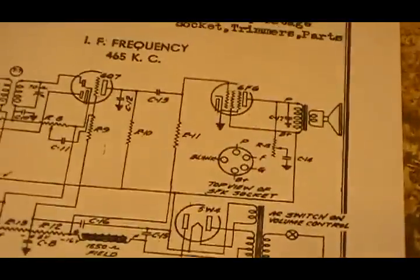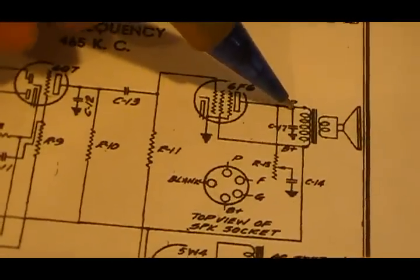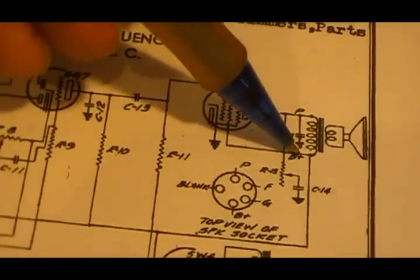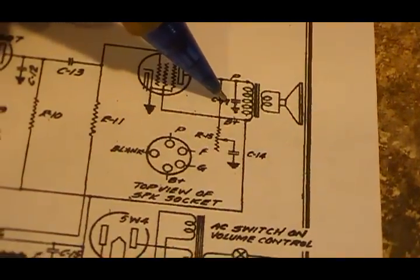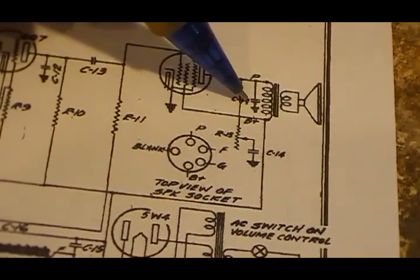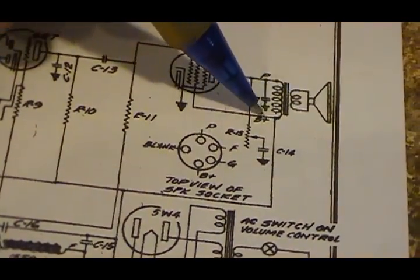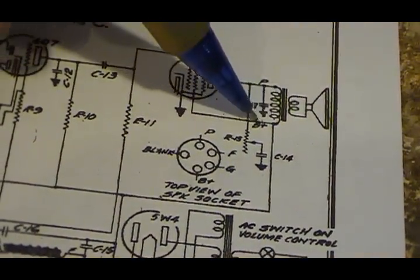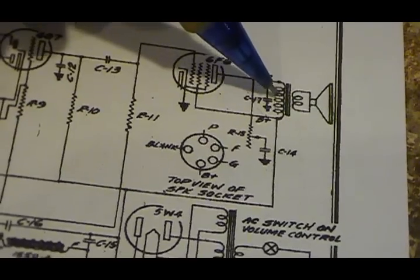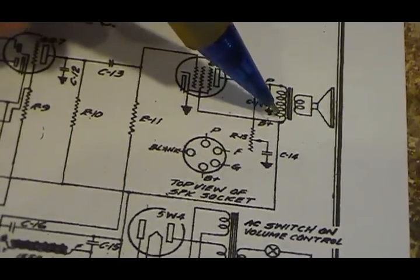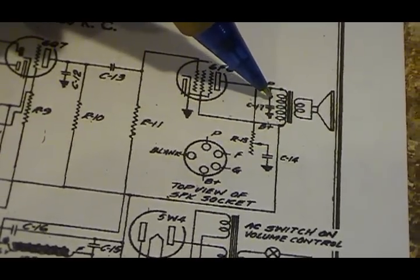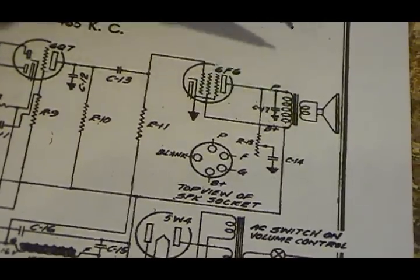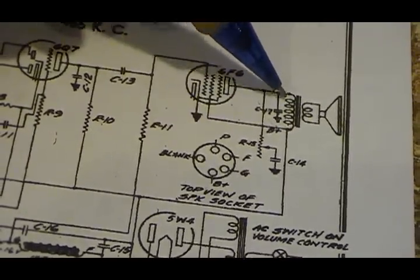If there's a cap going clear across that primary, it could be a 1000 volt, could even be as high as 1600 volt. And what I'm talking about is, looking down here at the schematic, this particular radio doesn't have that, but some radios do, where it's got one cap going clean across this primary.